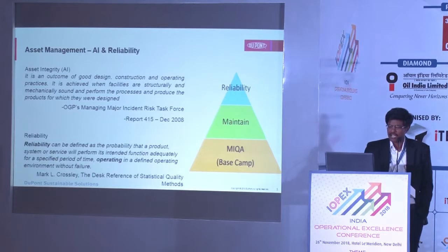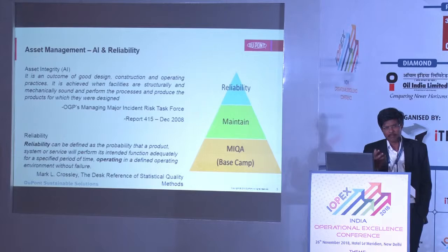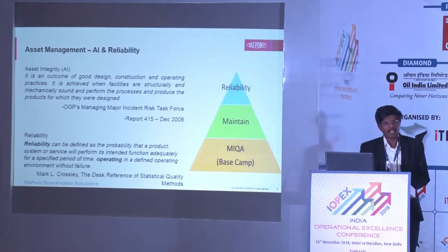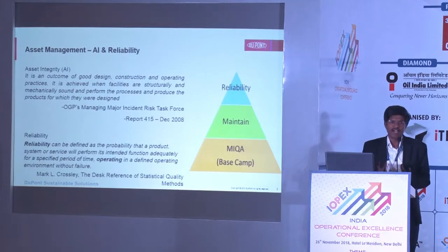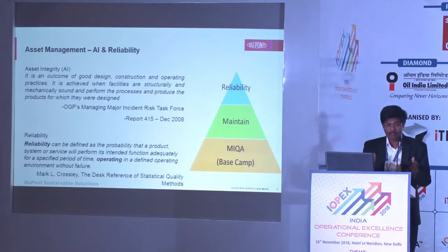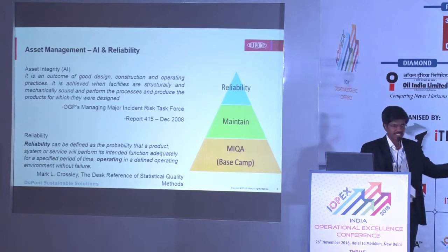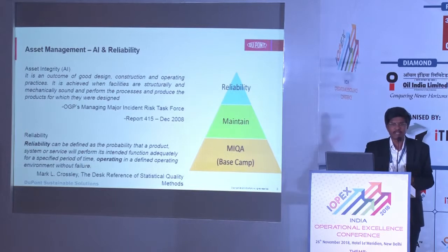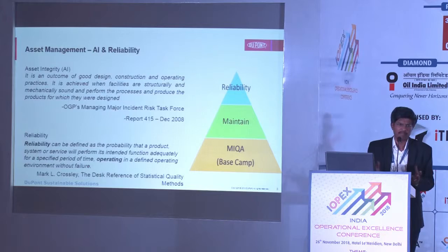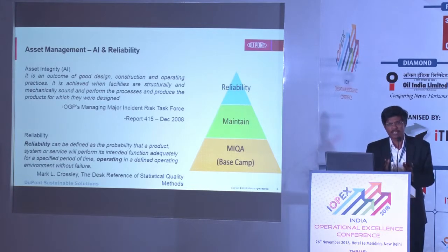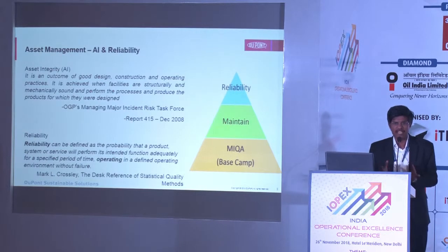Reliability is primarily about whether my plant is producing the desired product for the required period of time. When you look at the triangle, integrity programs form the foundation of a successful operation. Unless you have a well-defined and executed integrity program, you cannot hope to achieve the reliability your facility is supposed to have. You then need the right maintenance strategies applied at various stages of your plant's life cycle.